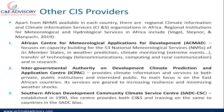The Intergovernmental Authority on Development Climate Prediction and Application Centre — ICPAC — is based in East Africa, focusing on Kenya, Ethiopia, Eritrea, Sudan, and South Sudan. It provides climate information and services to both the private sector, public institutions, and interested parties. Its services are geared toward increasing resilience and minimizing weather shocks. It provides information early enough to protect communities from weather shocks in a region that experiences significant drought.